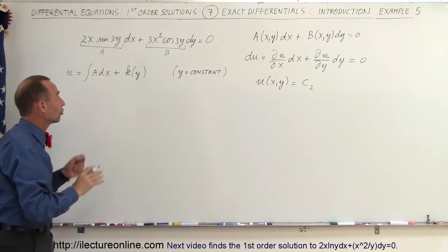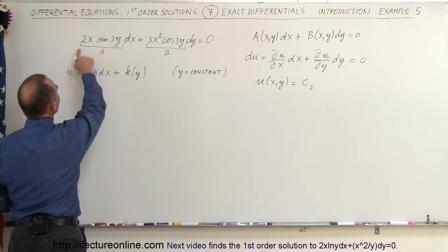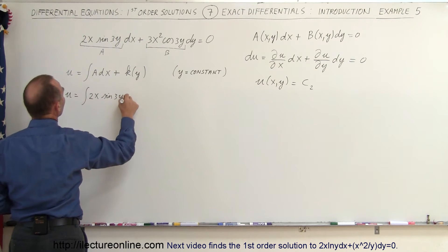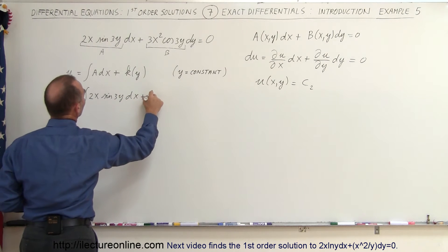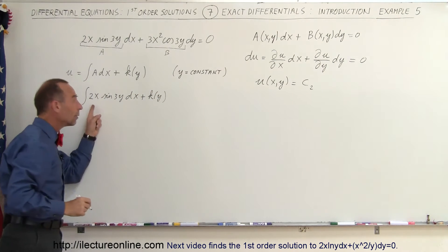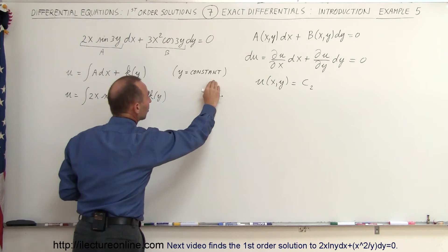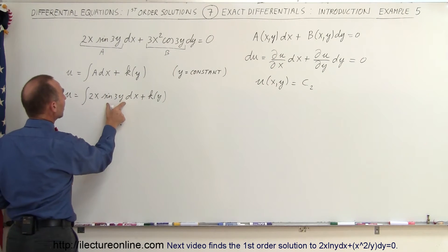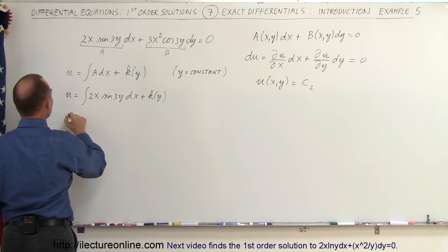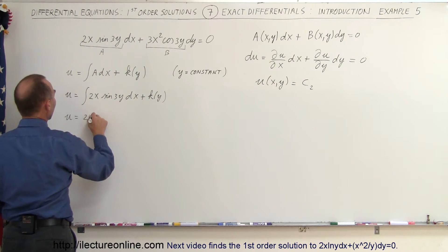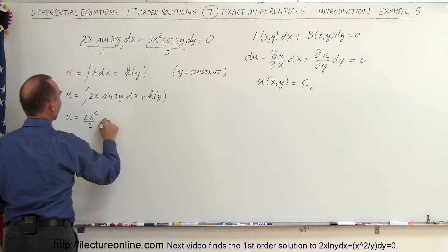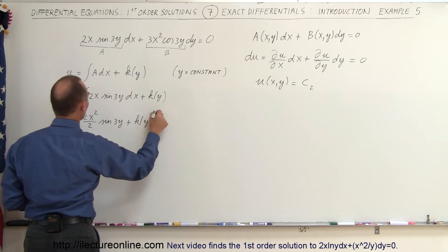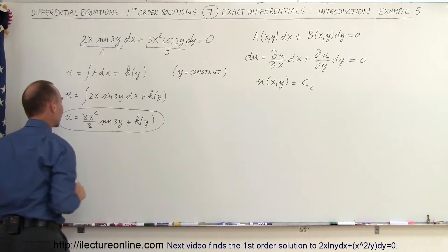We'll determine that function later. Replacing a with its value, u equals the integral of 2x times the sine of 3y dx plus k(y). Integrating while keeping y constant — since sine of 3y is a constant — gives us x squared times the sine of 3y plus k(y). That's the general solution so far; the two's cancel out.